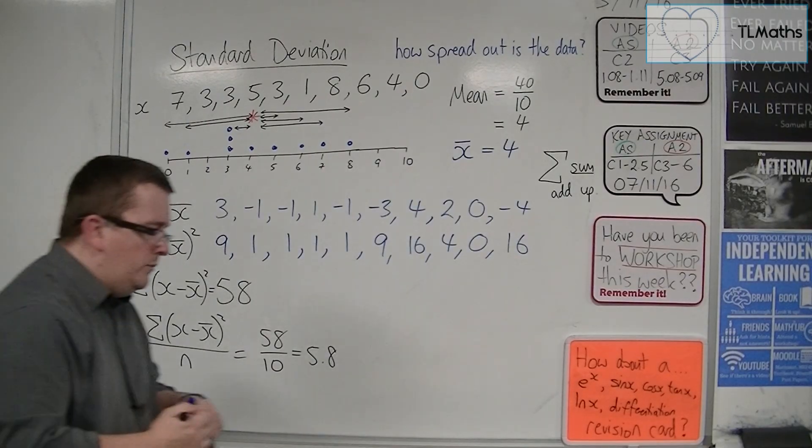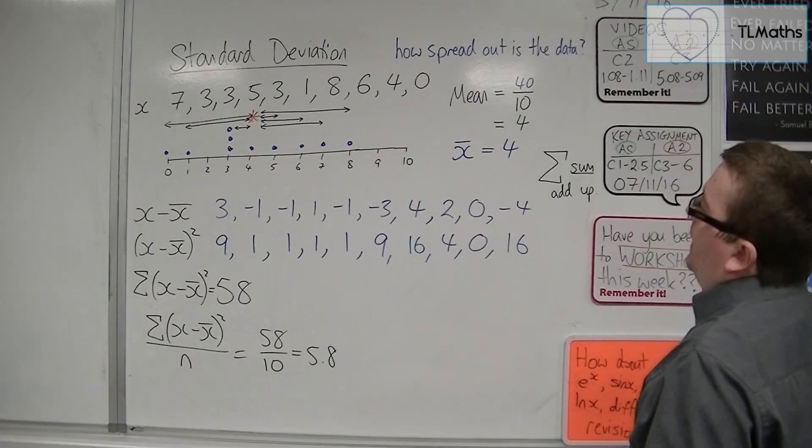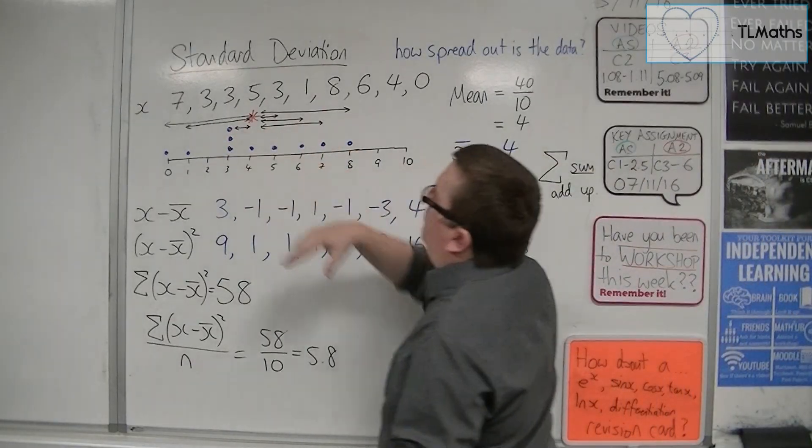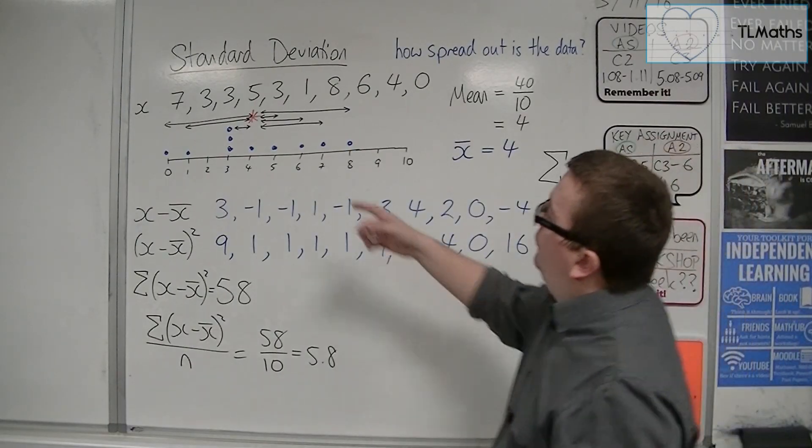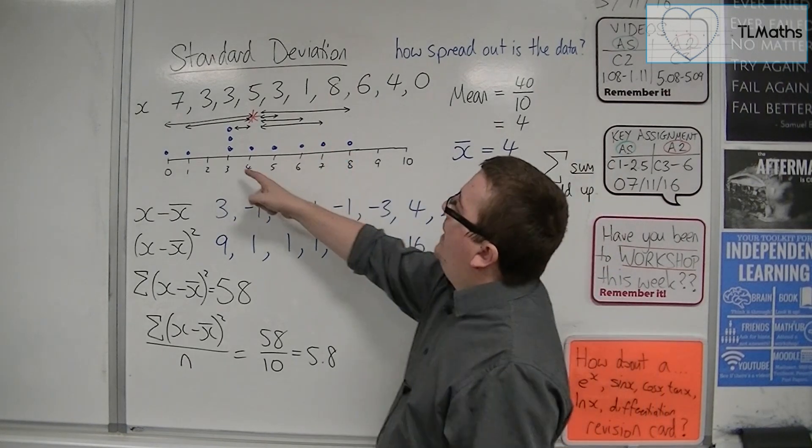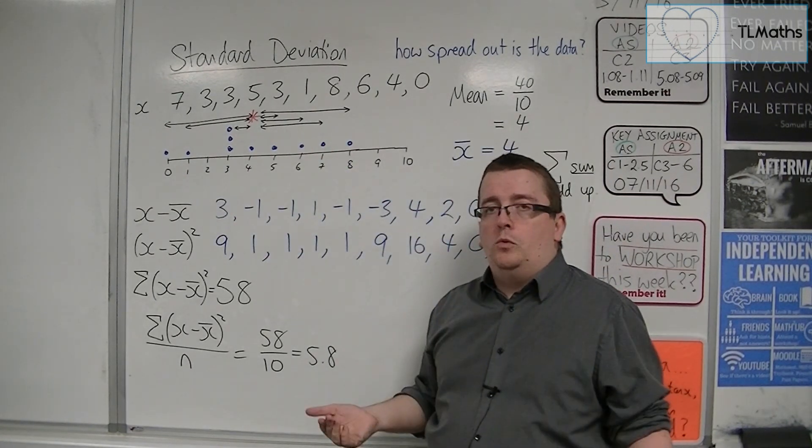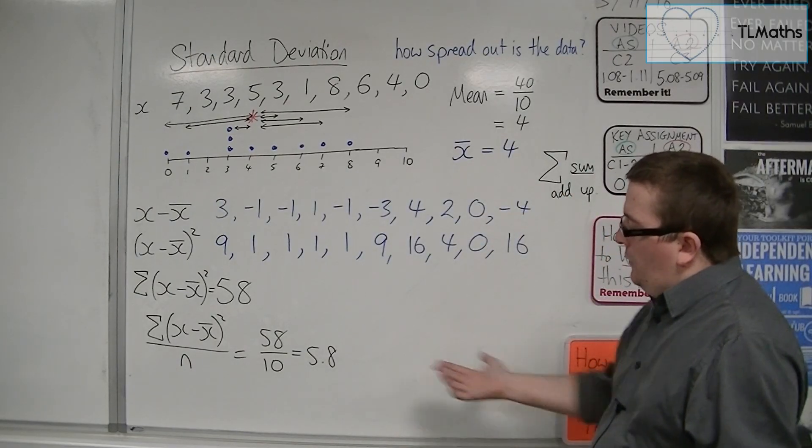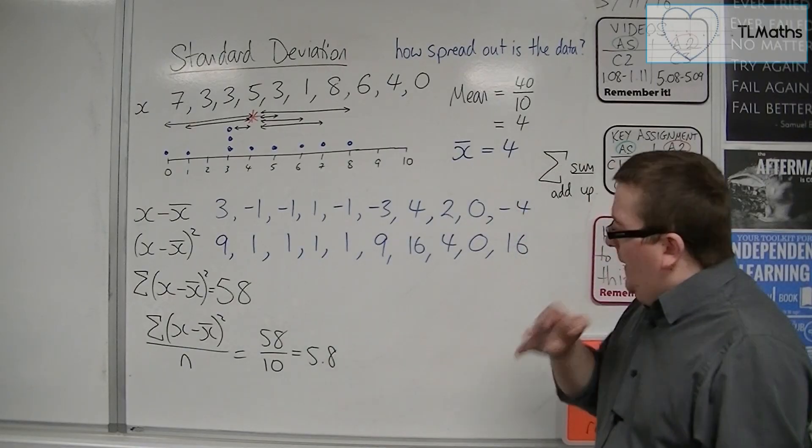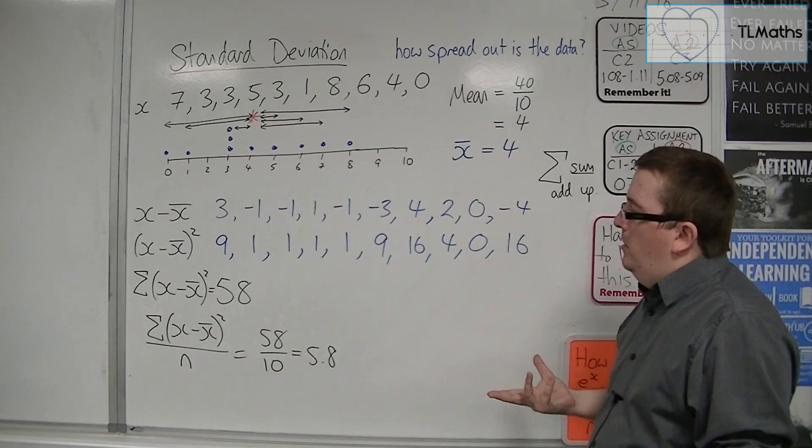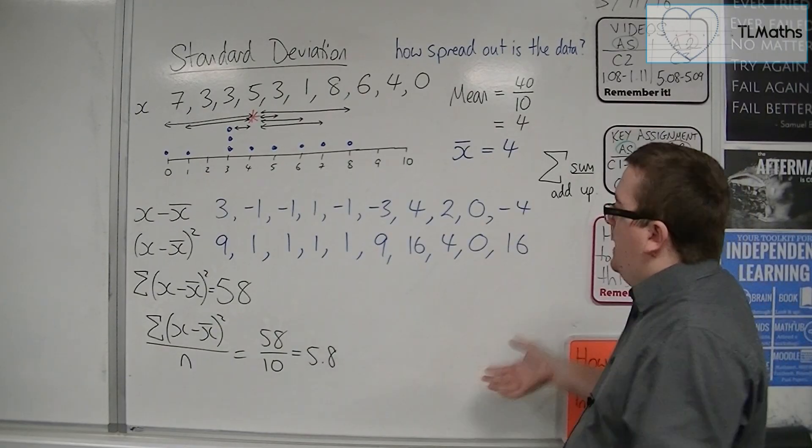Okay. So, let's have a look at this then. Does that make sense? 5.8. Are these, on average, 5.8 away from the mean? Well, the mean was at 4. The furthest away is 0 and 8. Well, that's only 4 away. And that's got to be the average? Well, that doesn't really make any sense. So, where was the problem? What's gone wrong?